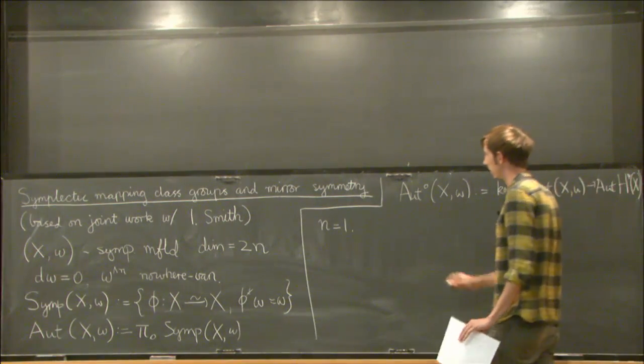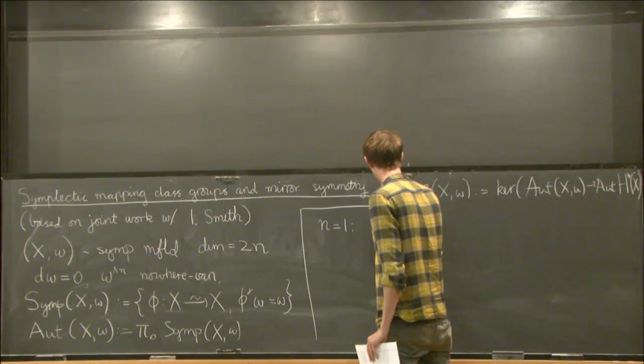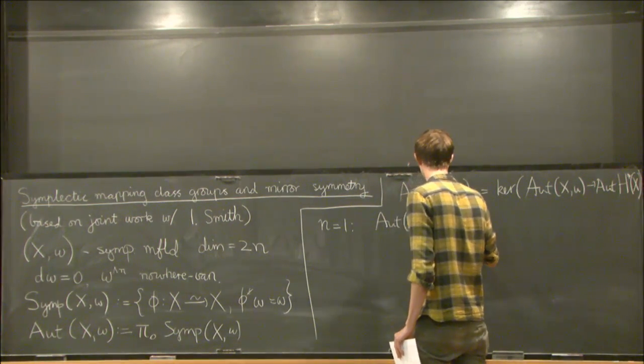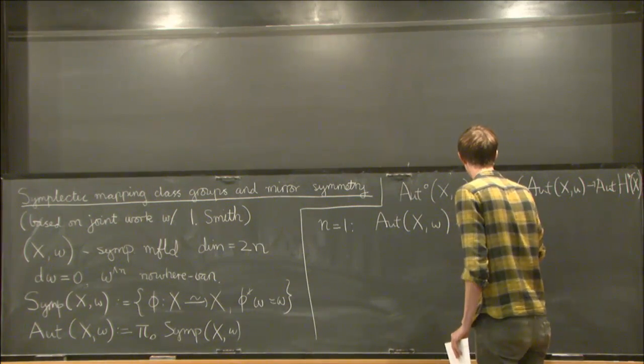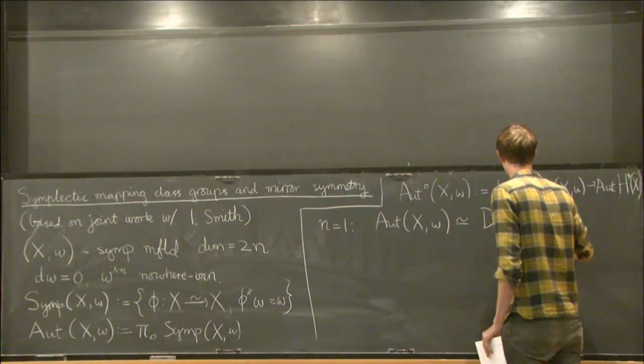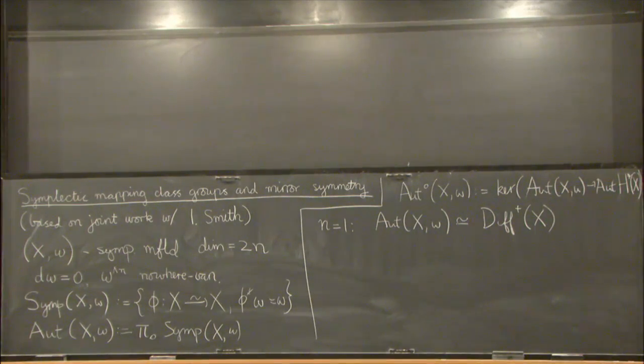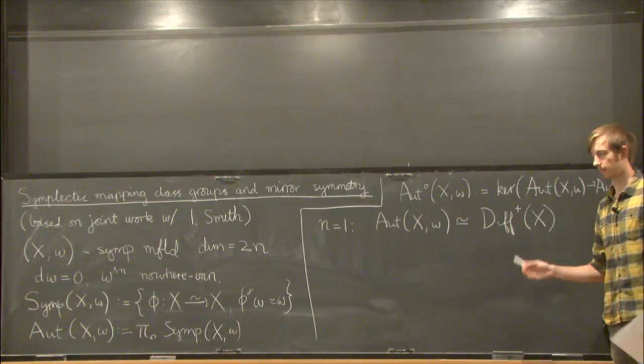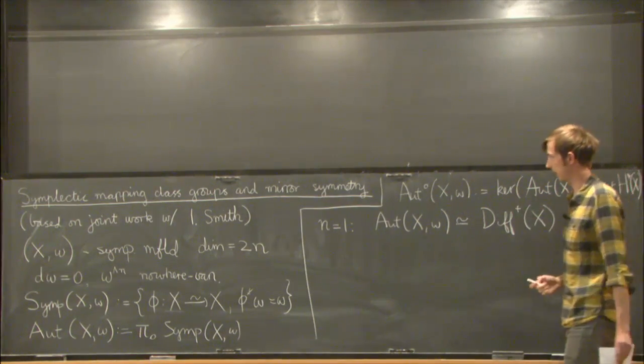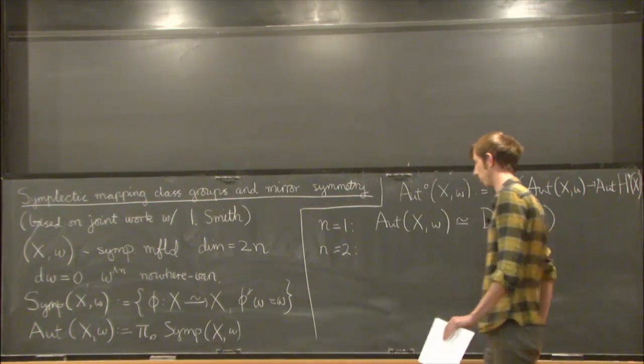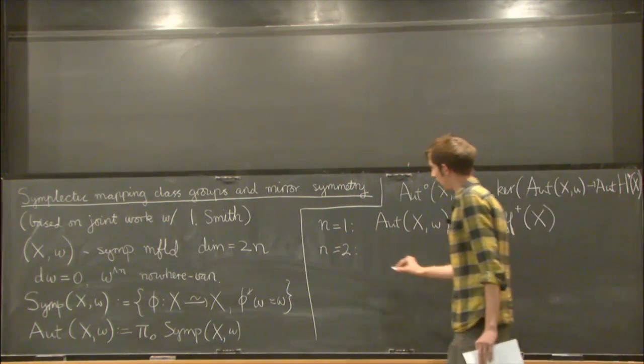Well, when N equals one, there's actually nothing symplectic going on. This group is homotopy equivalent to orientation preserving diffeomorphisms of X. Very interesting and well-studied object, but not one that has any specifically symplectic content.